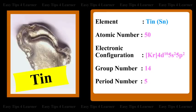For the element Tin, the atomic number is 50. The electronic configuration is Kr 4D10-5S2-5P2. The group number is 14 and the period number is 5.